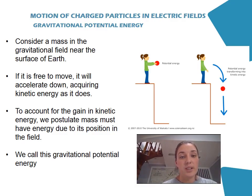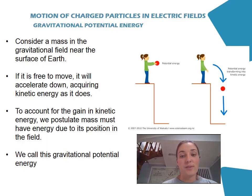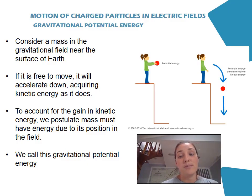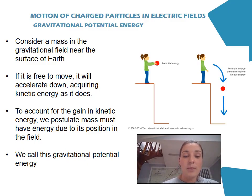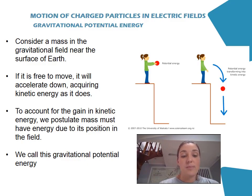The first thing we need to look at is gravitational potential energy, which we're all familiar with. It's useful to imagine something happening close to Earth so that we can relate it to what happens near a charge. If we're looking at a mass within the gravitational field near the surface of the Earth — here we have a diagram of a girl standing on top of a cliff holding a ball — if she drops the ball, it's free to move and will accelerate down, acquiring kinetic energy. To account for this gain in kinetic energy, we say the mass must have energy due to its position in the gravitational field. We call this gravitational potential energy.